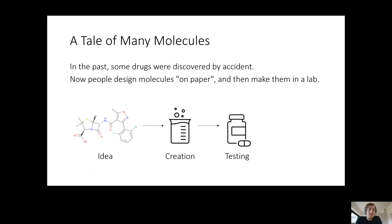It depends on what you're exactly trying to do, but if you're trying to cure some disease, you might start by checking if the compound is non-toxic. If something is toxic or a poison, it's certainly a bad medical drug. If it's not toxic, then maybe you want to try to test it on animals, or then on humans, and so on. It's obviously a very complicated process.